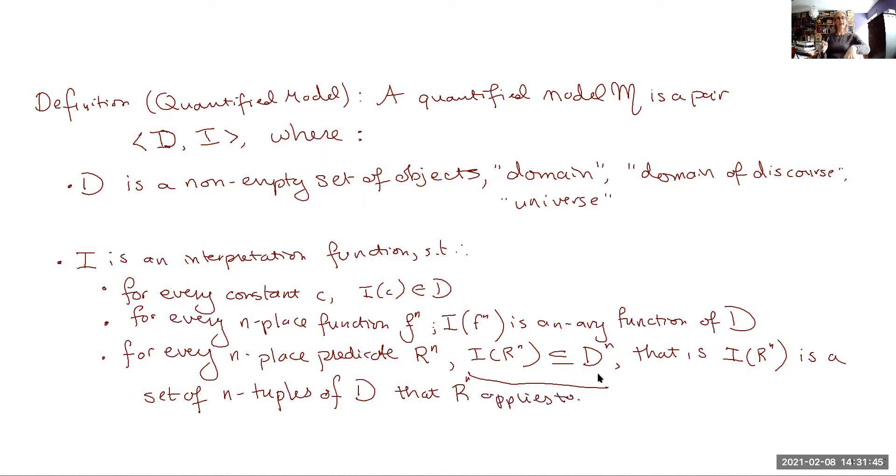And these are the ones that the relation R applies to. So n-tuple is a very nice logic-y word. You might know of, like, doubles, triples, quadruples, quintuples, sextuples, septuples, octuples, etc. N-tuple is just the generalization of that.